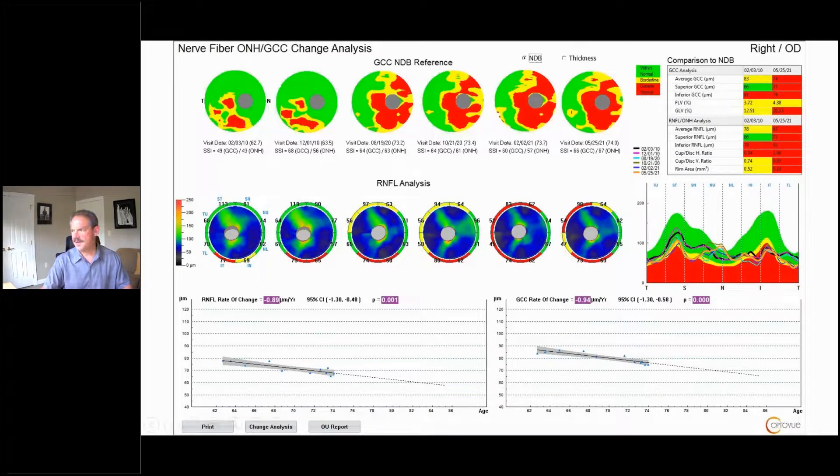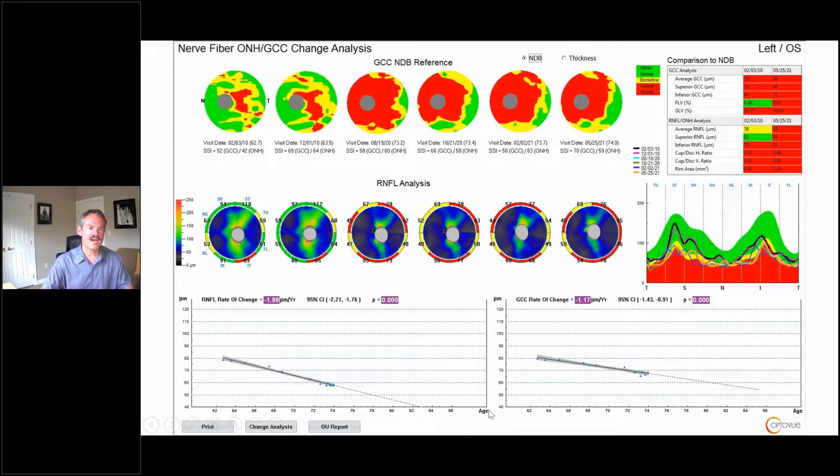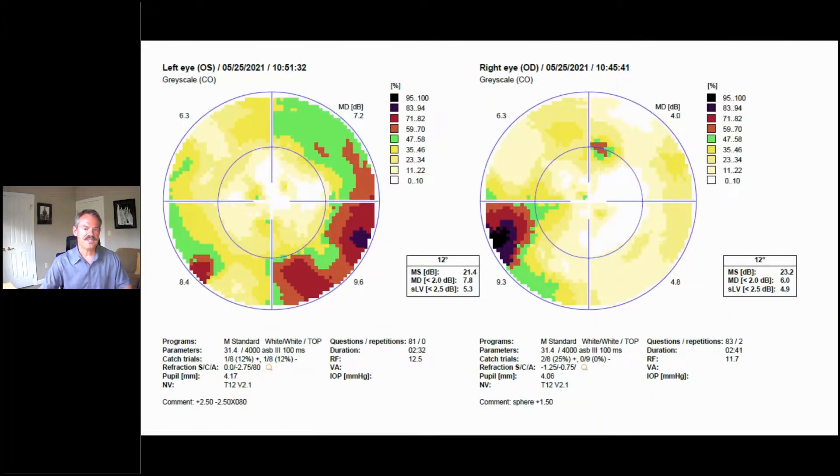We do see, as time goes by, the OCT progressing, both the ganglion cell complex trend analysis and the nerve fiber layer trend analysis. And in the left eye, a similar thing—the patterns are changing.